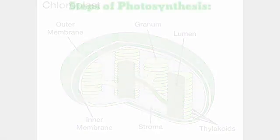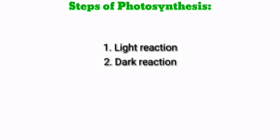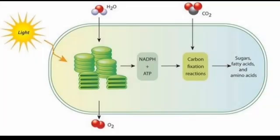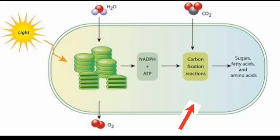Photosynthesis consists of two steps: a light reaction and a dark reaction. The light reaction takes place in the grana of the chloroplast — the stack-like structure — where solar energy is converted into chemical energy of ATP. Here, water is also split to release oxygen. The dark reaction takes place in the stroma of the chloroplast. Dark reaction doesn't mean it takes place in the dark; it means it does not require light energy. The chemical energy produced from the light reaction is utilized in the dark reaction.